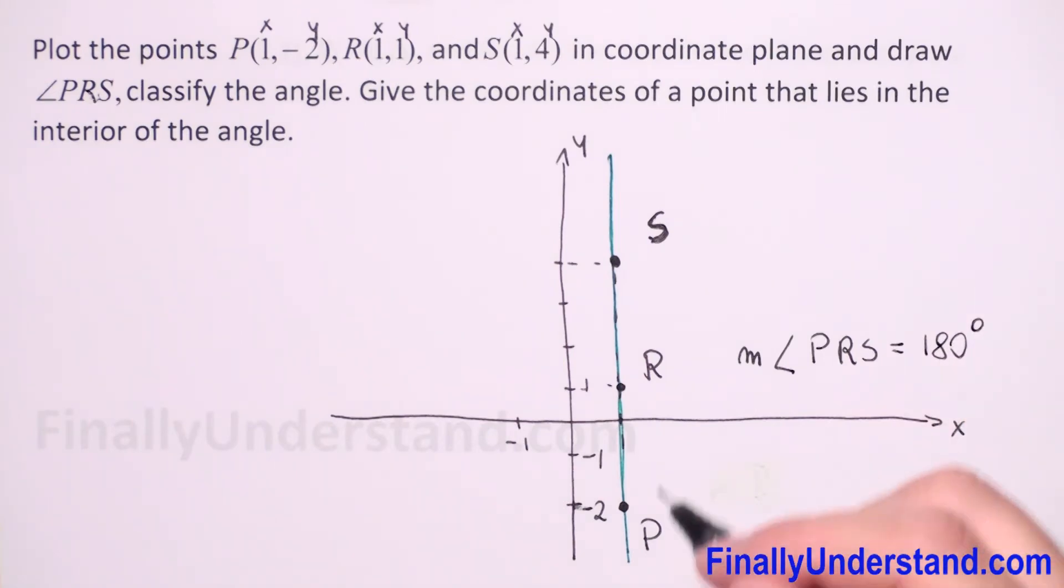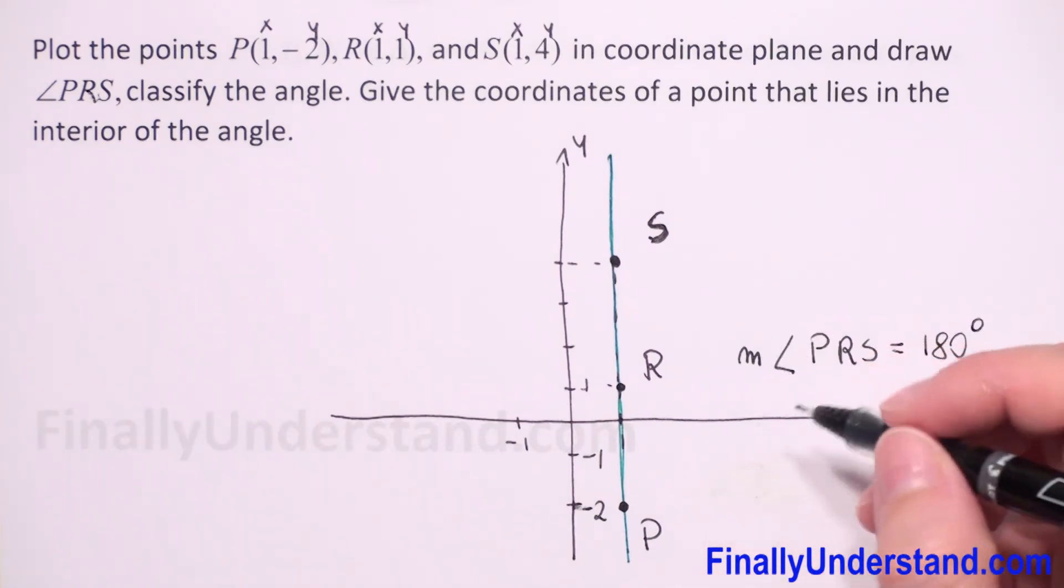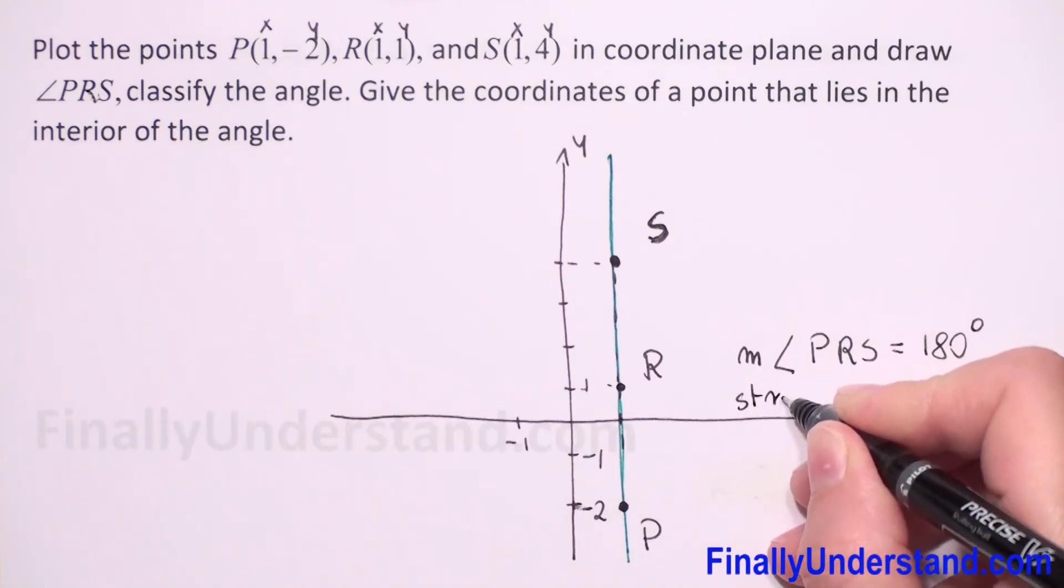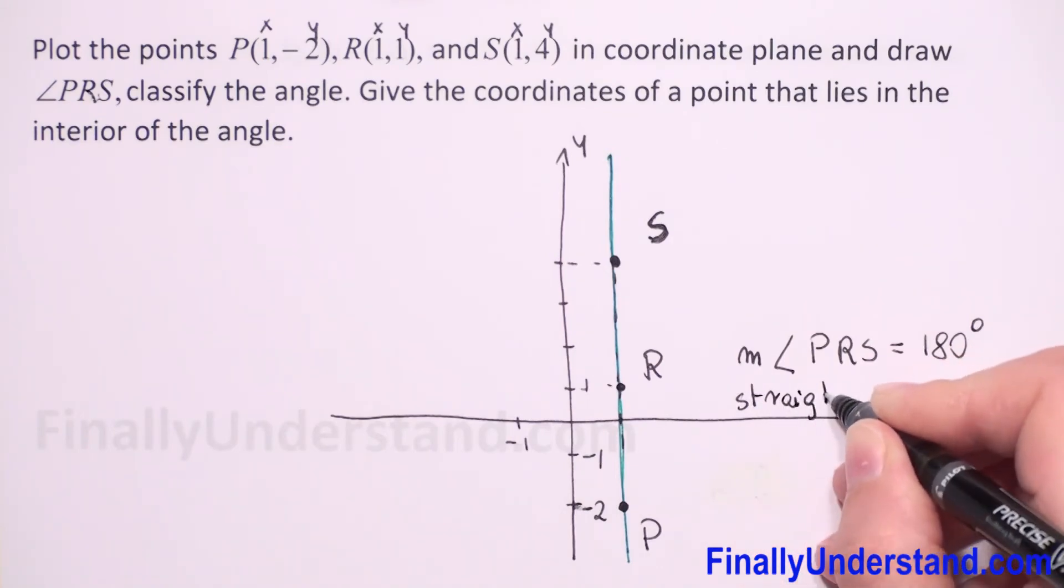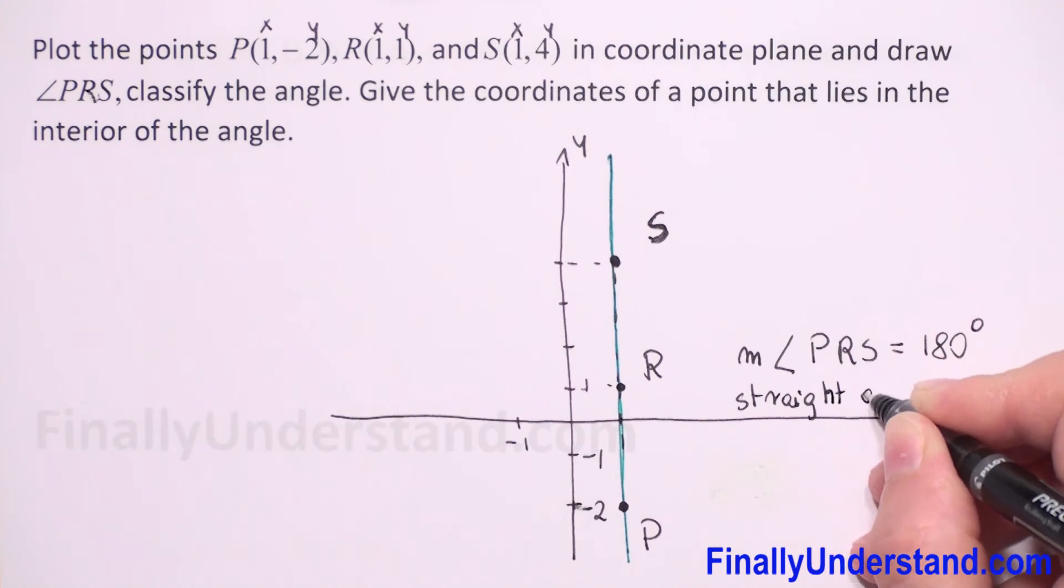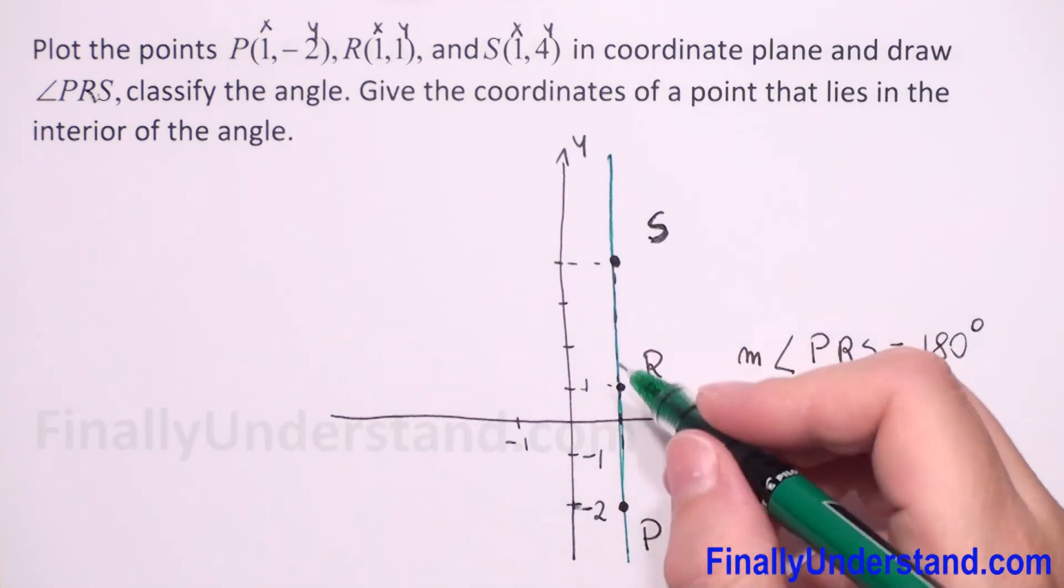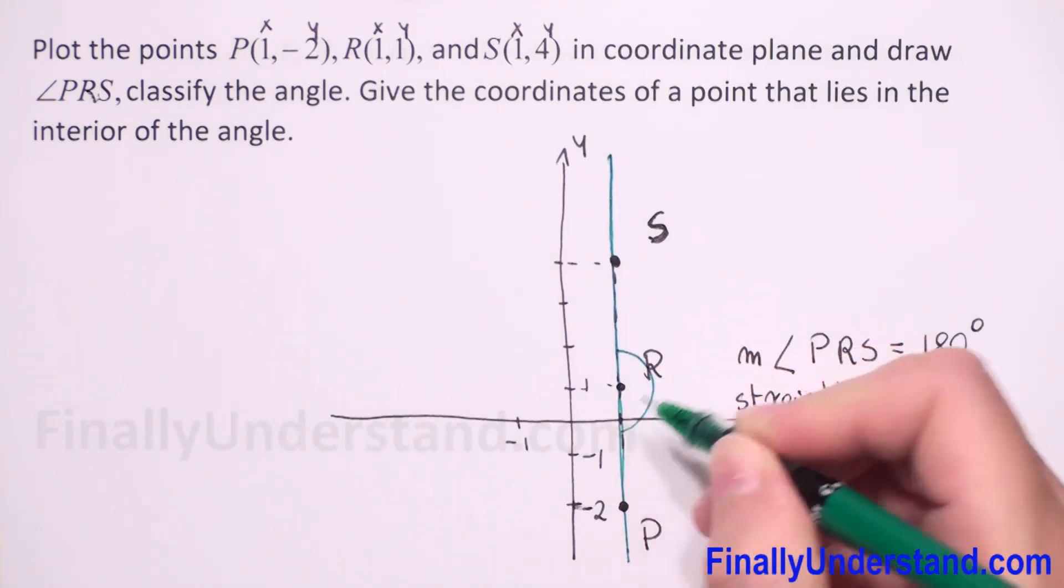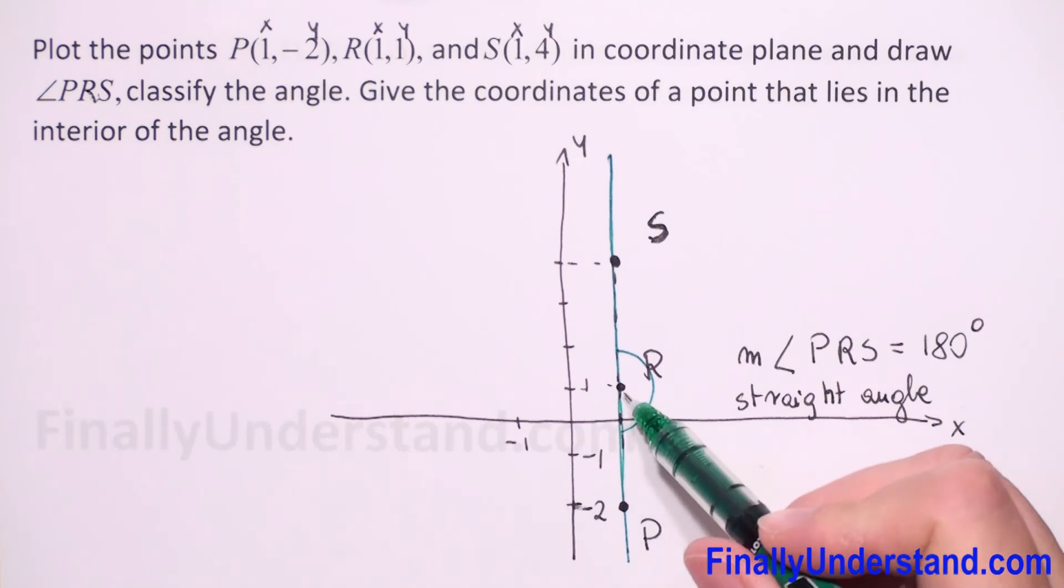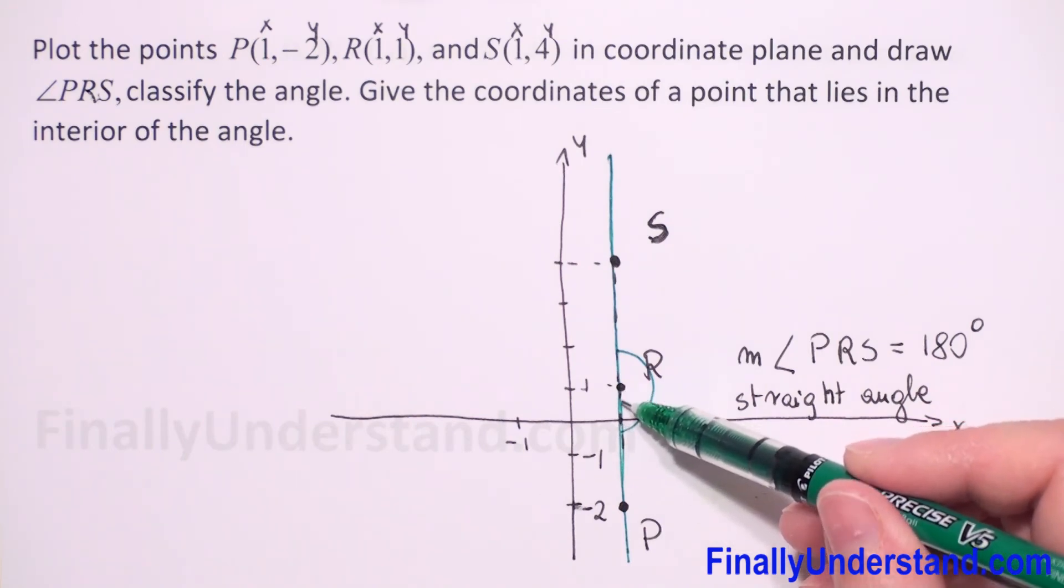And now we have to choose a point that lies in the interior of the angle. Let's draw this angle. If this is our angle PRS, the point which is between ray RP and RS...